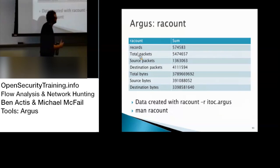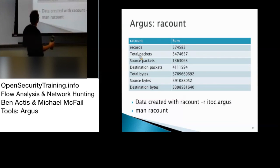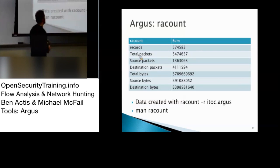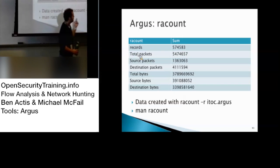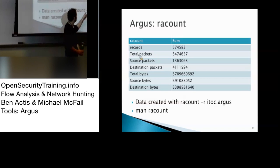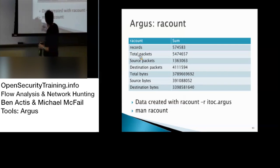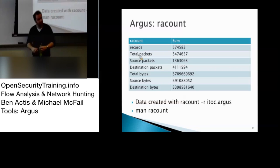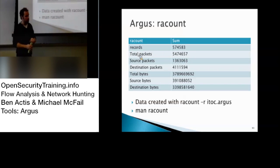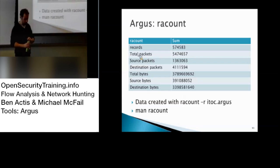Now we actually go through some things. Count — same approach as with Silk. All you're going to do is just RA count, and in that data folder there should be an Argos directory. You can find it there — it's just R, idoc.Argos. If you go to home/user/student, there should be a data directory there.